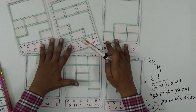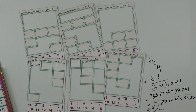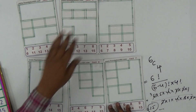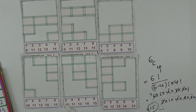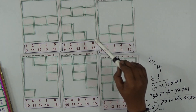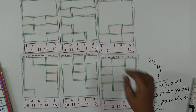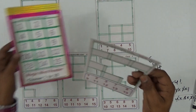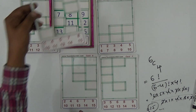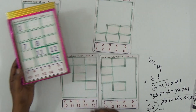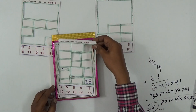Let me show one final example with number 15. I check which cards contain 15 — it turns out four cards have it. I take those four cards and stack them here. Number 15 is in this card, keep it. Number 15 is in this card too. If you align them exactly, the number will come up automatically.